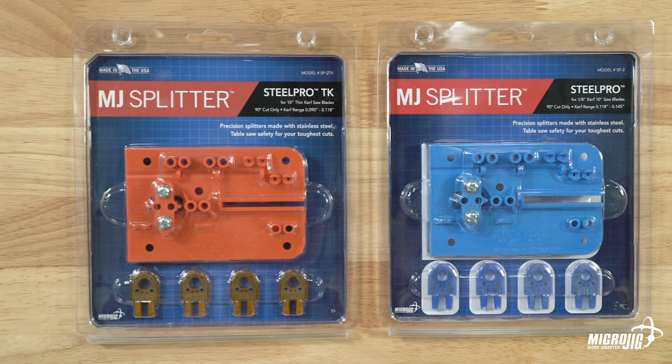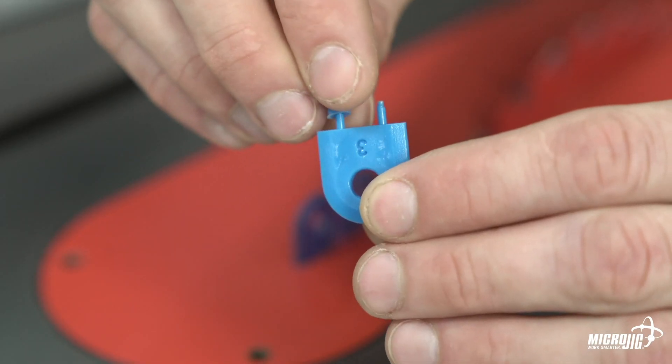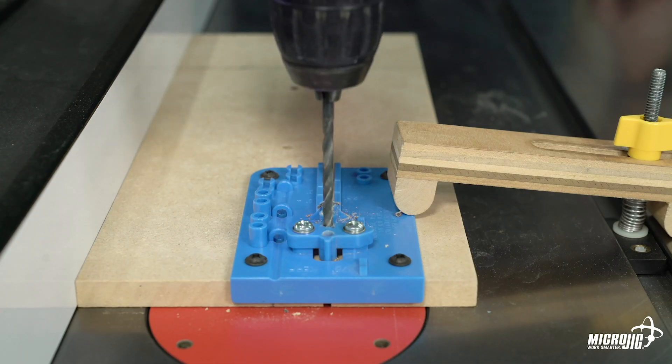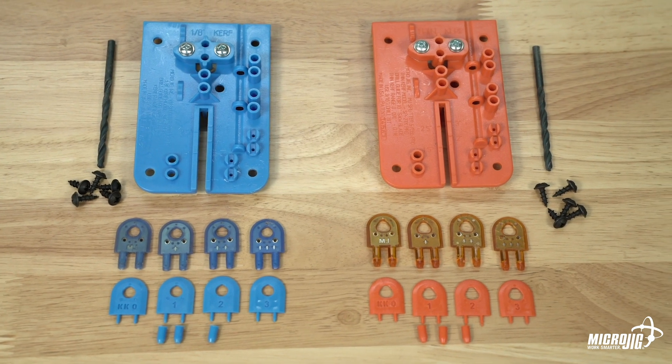The MJ Splitter Steel Pro comes with four splitters, four kerf keepers, a drill bit, and an easy to use drill guide. Everything you need for a precise, hassle-free installation.